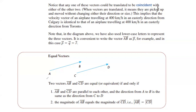Two vectors AB and CD are equal or equivalent if and only if AB and CD are parallel to each other, the direction from A to B is the same as the direction from C to D, and the magnitude of AB equals the magnitude of CD. Please write down this definition.